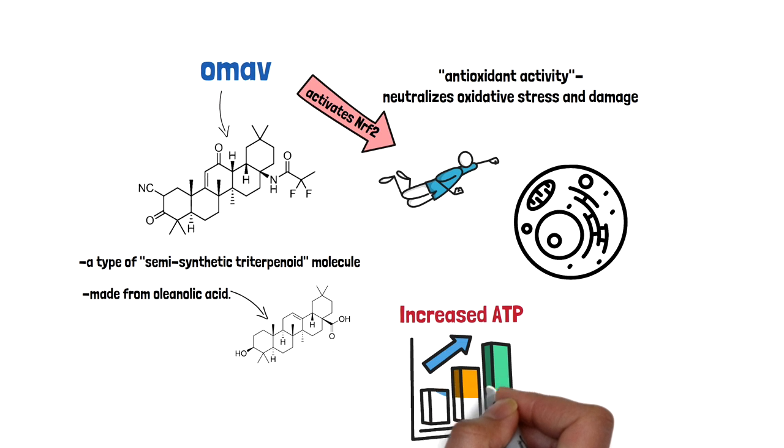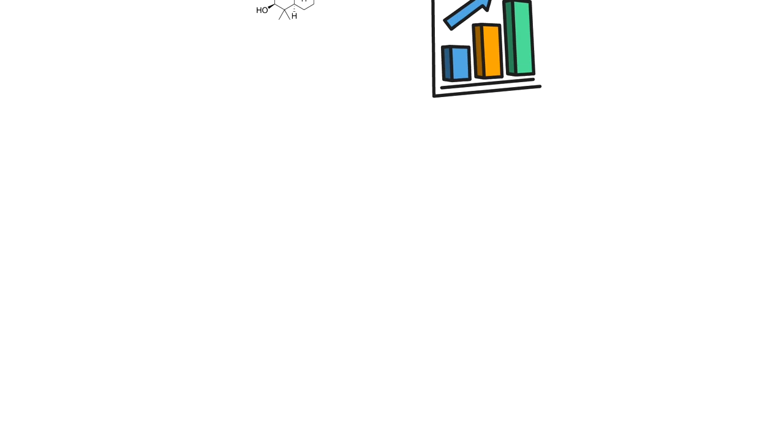While oleanolic acid is a very weak NRF2 activator, the chemical modifications made to obtain OMAV make it much more potent and easier to take.